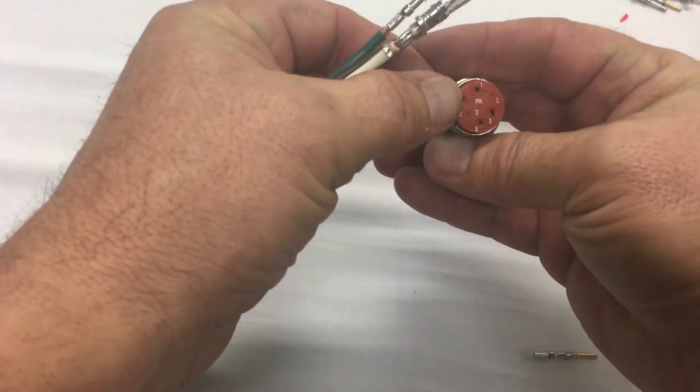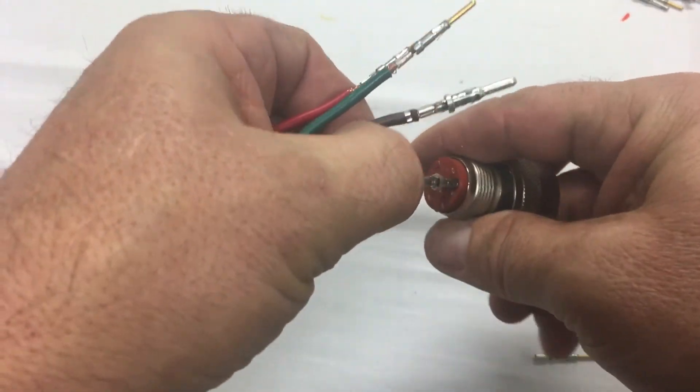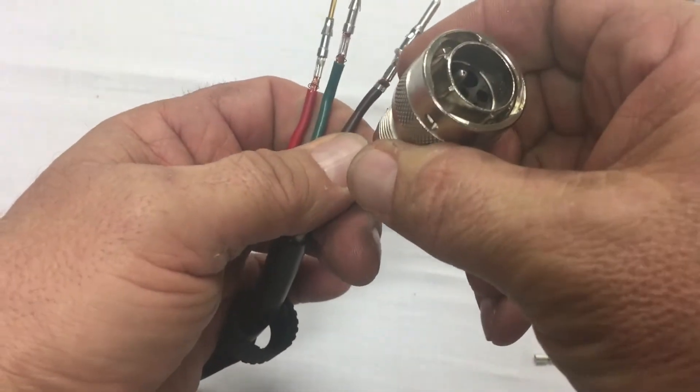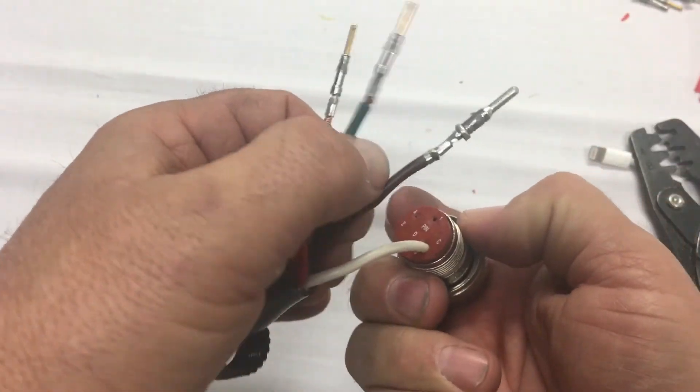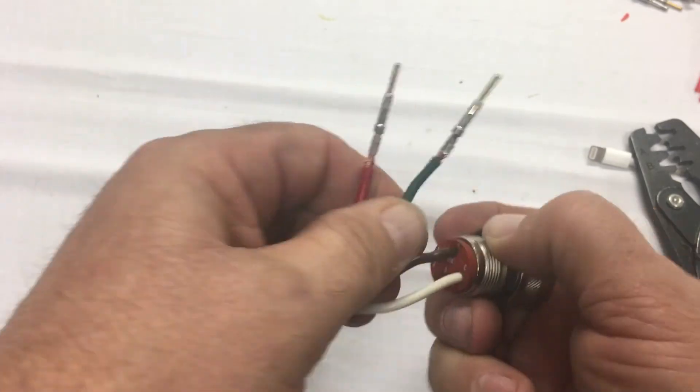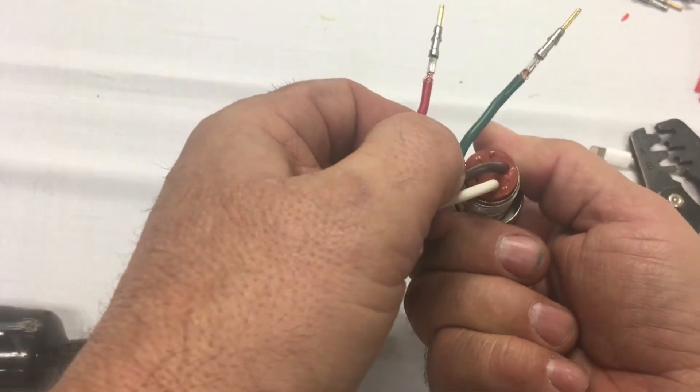And now I'm ready. So this is actually got the numbers and everything on it. White is three. I'll just push it through, it'll click when it gets into place like so. Brown is one.